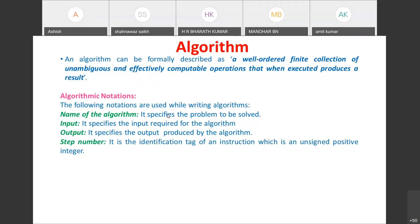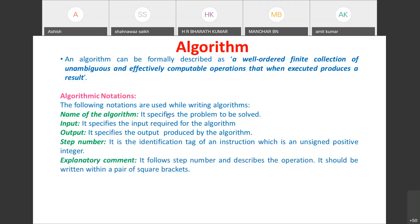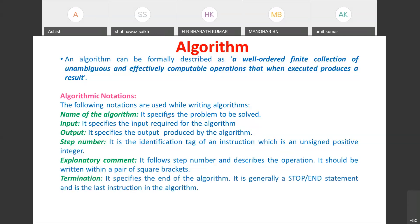The step number is the identification tag of an instruction, which is an unsigned positive integer. For each instruction, if a description is required, you can include an explanatory comment written within a pair of square brackets, following the step number. The last notation is termination — the last step should be 'stop' or 'end' to indicate the end of the algorithm.